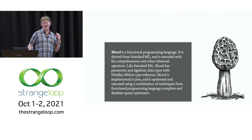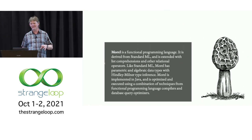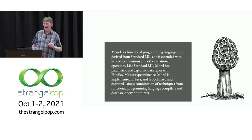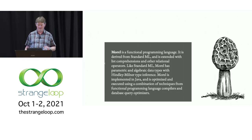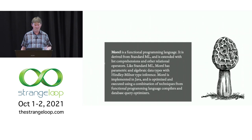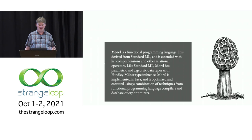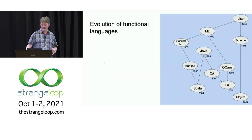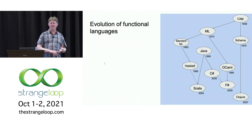Let me cut to the chase and describe in one page what Morel is. Morel is a functional programming language. It is derived from Standard ML and is extended with list comprehensions and other relational operators. Like Standard ML, Morel has parametric and algebraic data types with Hindley-Milner type inference. Morel is implemented in Java and is optimized and executed using a combination of techniques from functional programming language compilers and database query optimizers. If that makes sense to you, you can leave now.